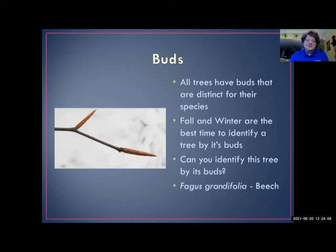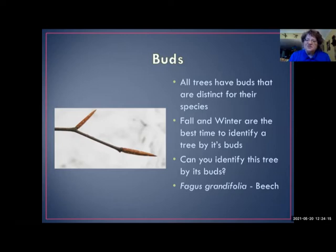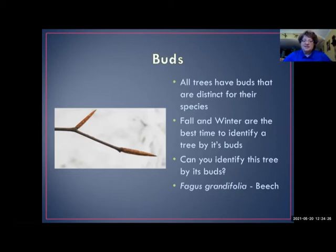One very easy tree to identify by its bud is the beech tree, Fagus grandifolia. Watch yourself in the woods around these in winter — the buds are so sharp that people have been known to have their eyes stabbed by them while hiking. So you've got to be careful when you're around these; they can be dangerous.